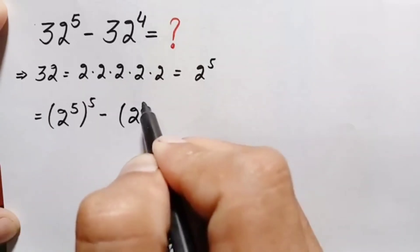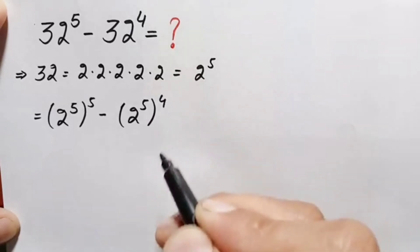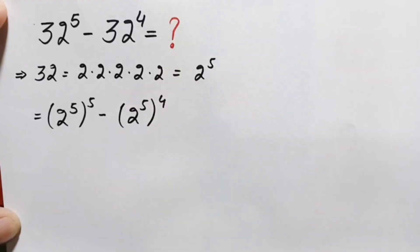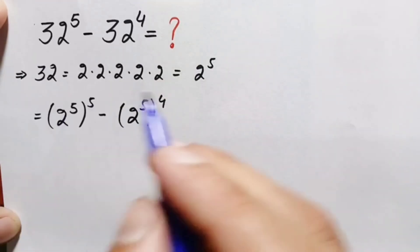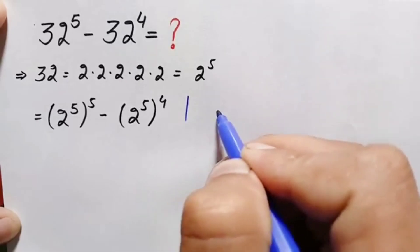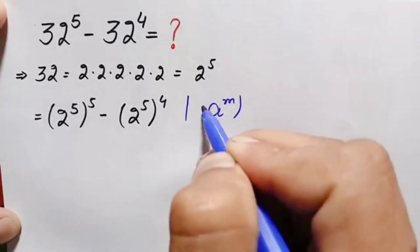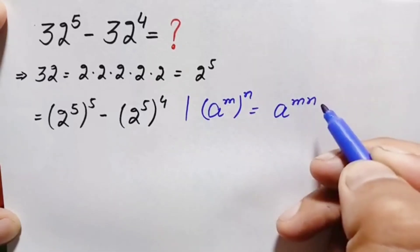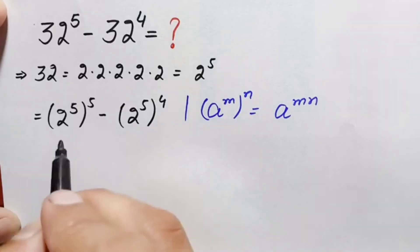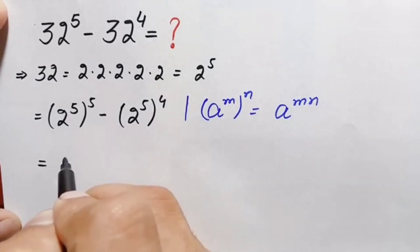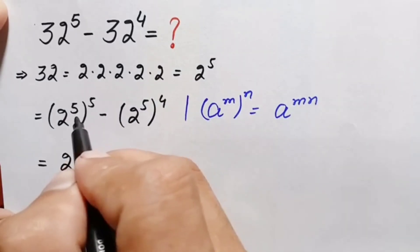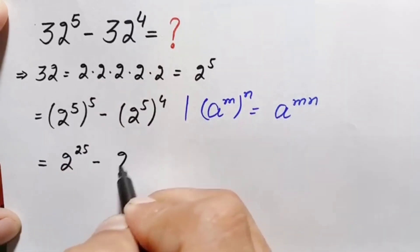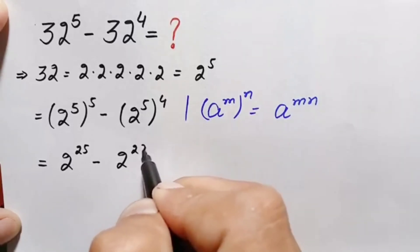In both terms we apply the exponential identity: a raised to power m, whole raised to power n, equals a raised to power m times n. Using this identity, the first term becomes 2 raised to power 5 times 5, which is 2 raised to power 25. The second term becomes 2 raised to power 5 times 4, which is 2 raised to power 20. So the expression is 2 raised to power 25 minus 2 raised to power 20.